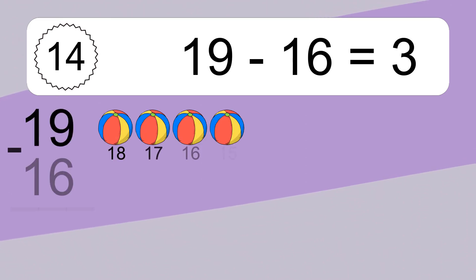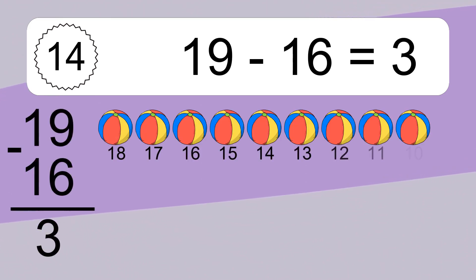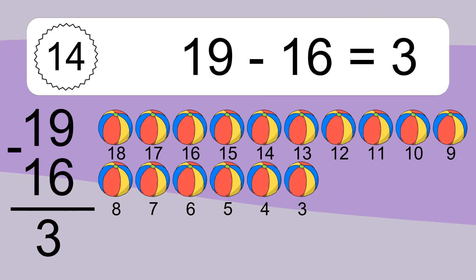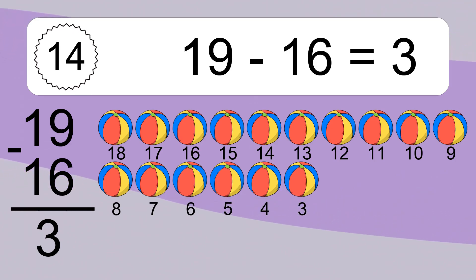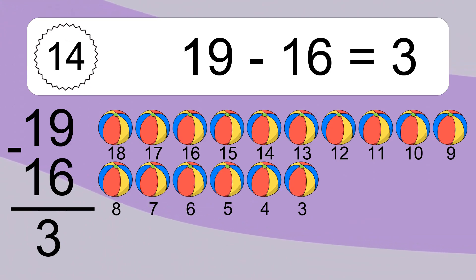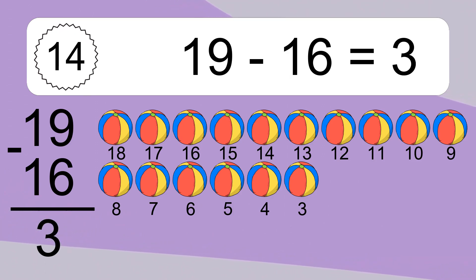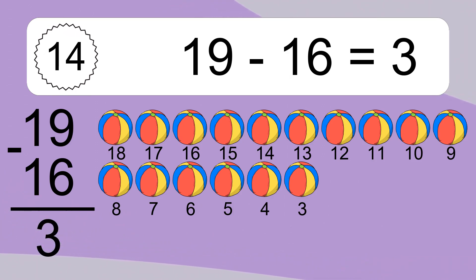19 minus 16 equals what? 19 minus 11 equals 6. Let's count it. 19, 18, 17, 16, 15, 14, 13, 12, 11, 10, 9, 8, 7, 6, 5, 4, 3.